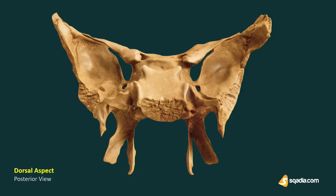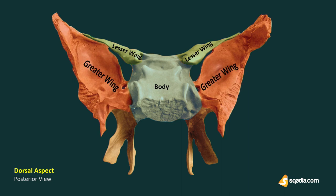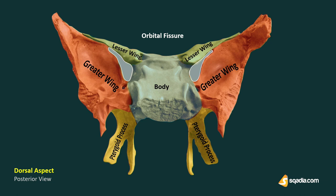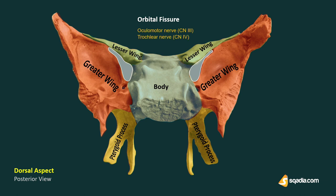Moving to the structure of the sphenoid bone: in the dorsal view it resembles a bat, with a body in the center and wings coming out of it. The two lesser wings are on the anterior part of the body, and the two greater wings extend from the lateral side. Two pterygoid wing-like processes are directed downwards from the junction of the body and greater wings. Between the lesser and greater wings is a cleft called the superior orbital fissure, which provides passage to three motor nerves: the oculomotor nerve CN3, the trochlear nerve CN4, and the abducens nerve CN6.